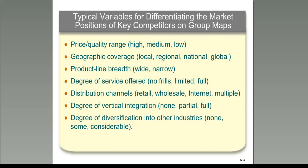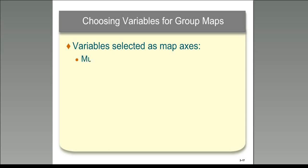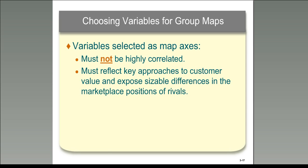Let's look at an example of how one might think about building a strategic group map. You look at the map axes and pick some, but you want to make sure they are things that don't necessarily go together. For example, revenue growth and profit growth tend to correlate because if you sell more you make more money, but revenue growth and gross margin per unit don't necessarily correlate. So you want to find dimensions that don't correlate with one another.